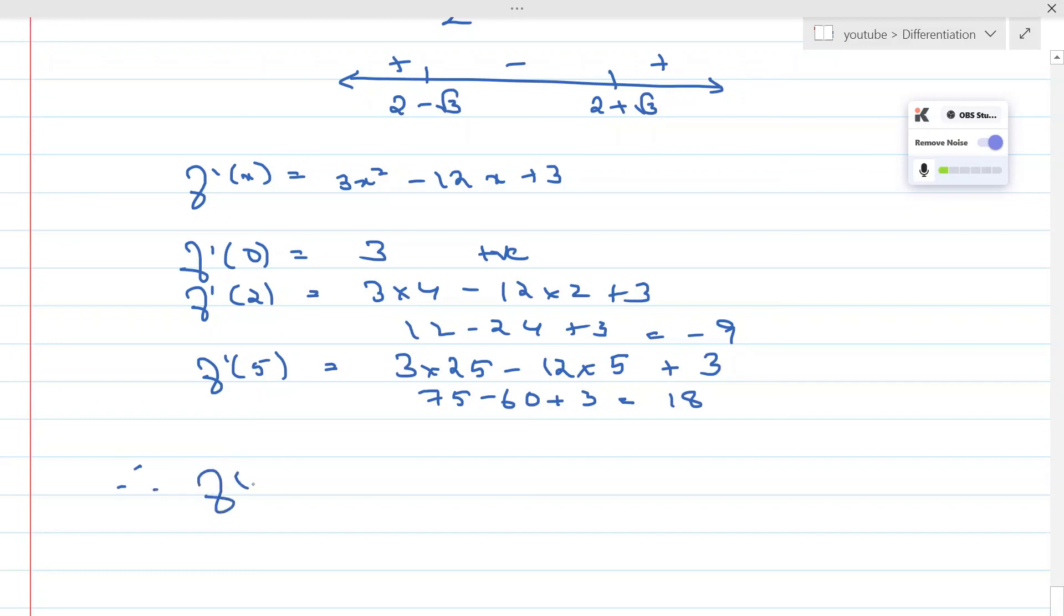Therefore, f(x) is increasing for x ≤ 2 - √3 and x ≥ 2 + √3. And f(x) is decreasing when x lies between the roots, which is x is between 2 - √3 and 2 + √3.